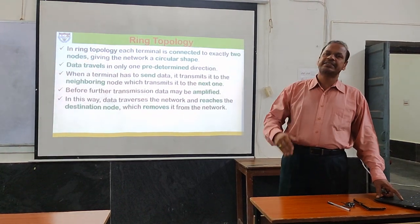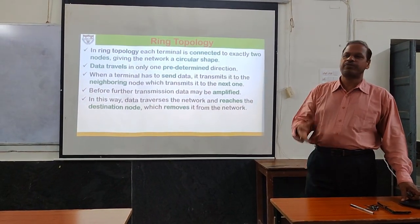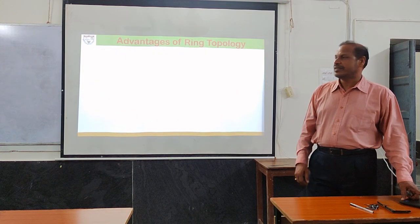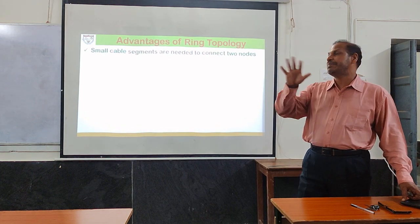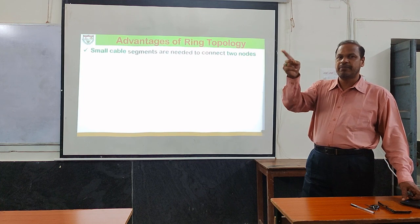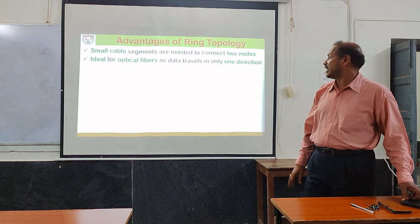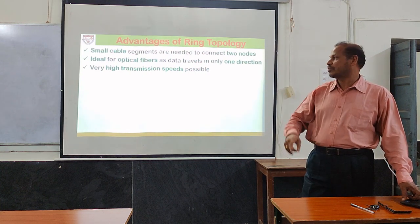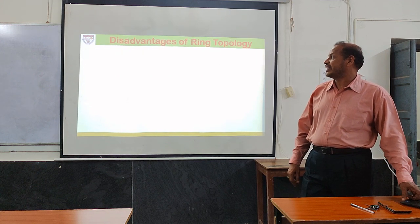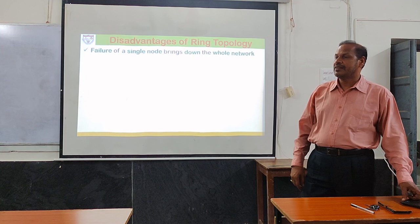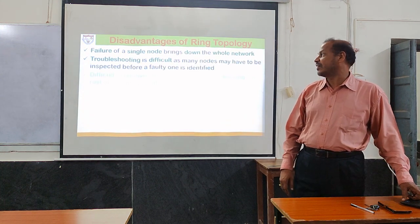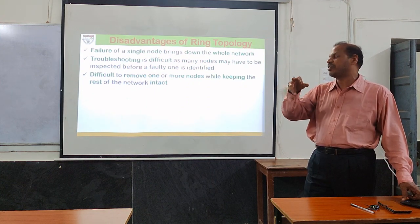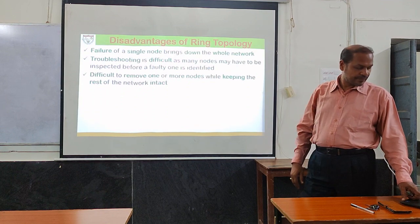Once the data reaches the destination in ring topology, the destination node copies the data and removes it from the ring. The advantages are: small cable segments are required; it is ideal for optical fiber since data travels in one direction; and it supports very high transmission speed. The disadvantages are: if one node fails, the whole network fails; troubleshooting is difficult; and adding or removing nodes requires reconfiguration of the entire ring.